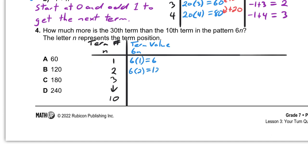And in the third position, it's going to be 6 times 3, and the value is going to be 18. And finally, when we get to the 10th position, it's going to be 6 times 10, which is 60.